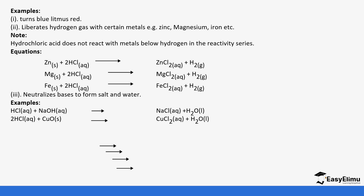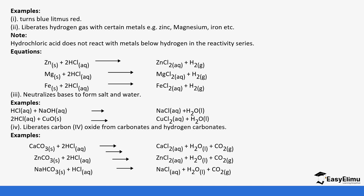For example, reacting hydrochloric acid with sodium hydroxide forms sodium chloride and water. Reacting it with copper oxide forms copper chloride and water. Notice that while copper metal cannot react with hydrochloric acid — because copper cannot displace hydrogen — copper oxide can react, making it possible to form copper chloride that way.